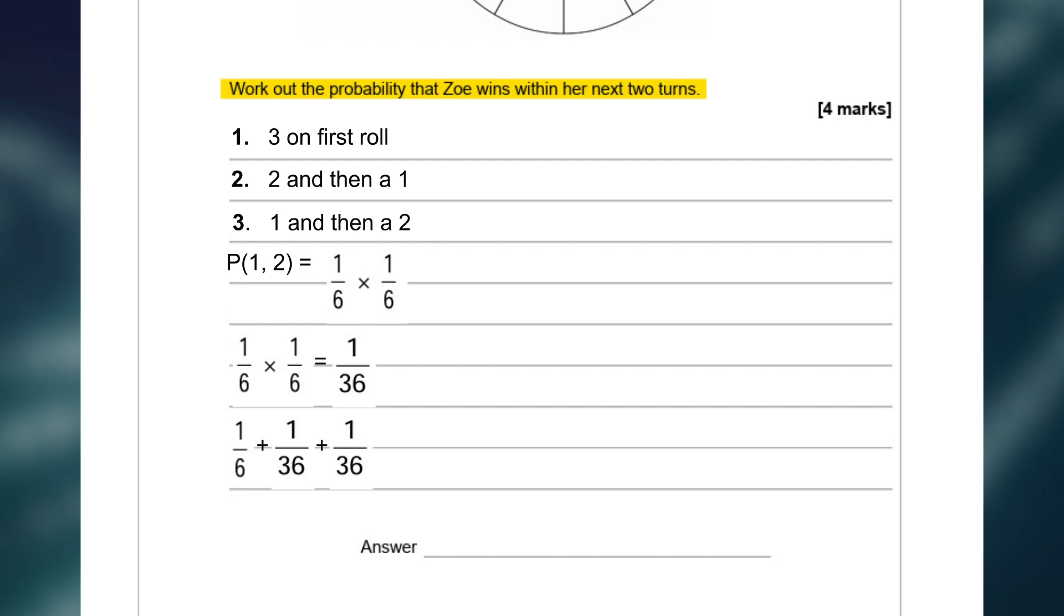And what we're going to do is we're going to add up these three options because remember it can be any of these options. So we're going to do one over six plus one over thirty six plus one over thirty six. Now pause it here and have a think, why can't we do this calculation as straightforward as it looks? And the answer is, is because we need to convert the one over six in order to do it because remember they all have to have a denominator of thirty six to add them together. So it's going to become six over thirty six plus one over thirty six plus one over thirty six. And this is going to give us a total probability of eight over thirty six. We are going to divide the numerator and denominator by four to simplify this down to two over nine. And this is our final answer, two ninths.